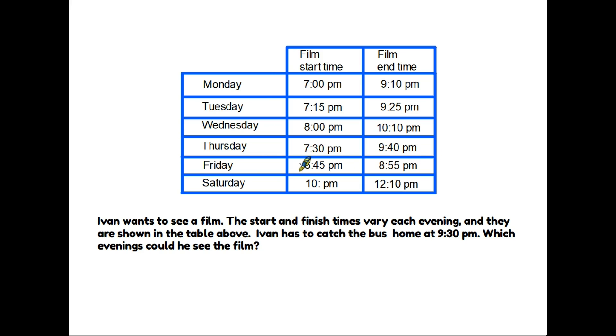Let's have a look at another table. As you can see the layout is very similar. We have rows. In this case each row is representing a day of the week from Monday to Saturday and the columns are entitled film start time and film end time. And the table is giving us information which should allow us to answer the question. So let's have a look.